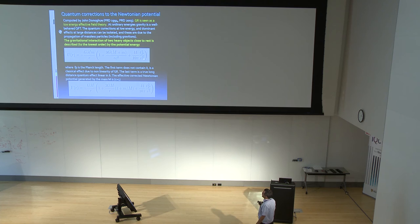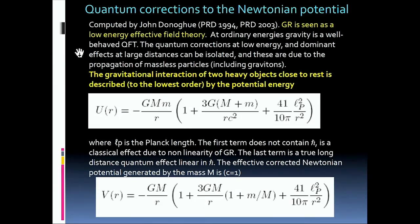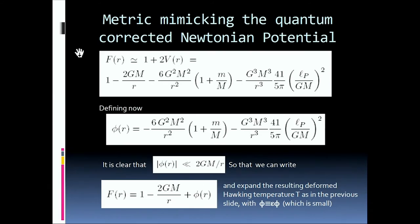And then what you get as the low energy quantum correction to the Newtonian potential is this object here, this expression. You have a classical term which essentially comes from classical general relativity, and then here you have a genuine quantum term linear in h bar. Here you have the square root of Planck length, so it's linear in h bar, this object. It's long range in the sense it's suppressed just by 1 over r squared. And since you have a potential energy like this, you have also the effective corrected Newtonian potential, which is this expression here.